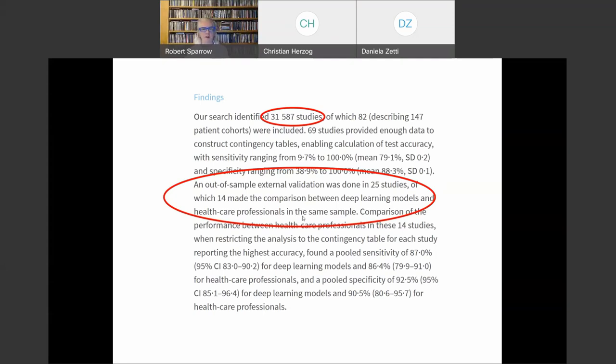There's this meta-analysis in the Lancet Digital Health that came out a couple of years ago looking at all the claims that had been made about the performance of AI, in particular deep learning, in medical imaging. What was striking is that they describe looking at 31,000 studies and ending up with 25 studies that did out-of-sample validation, and only 14 of those studies looked at a direct comparison between these deep learning models and healthcare professionals.